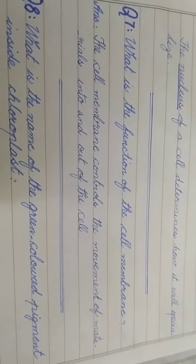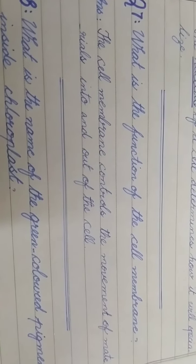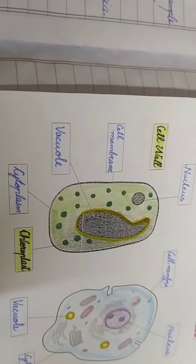Question number seven: the cell membrane is the outer covering and guard of the cell, controlling the movement of materials into and out of the cell. Question number eight: the chloroplast has a green disc-like structure containing the green pigment chlorophyll. For your journal, always use blue marker for the topic heading and chapter number, write in cursive with blue ink pen, and always put the day and date. Stay home, stay safe.